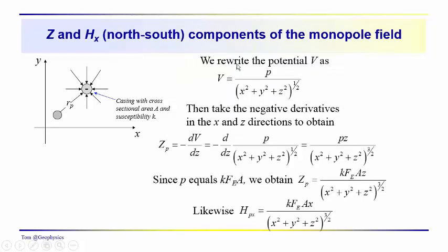But we'll rewrite the potential as P over x squared plus y squared plus z squared to the one-half. This is R, and x squared plus y squared plus z squared is equal to R squared. So then we take the negative derivative in the x and z directions. So in the z direction, this is going to give us the vertical field intensity minus dV dz.